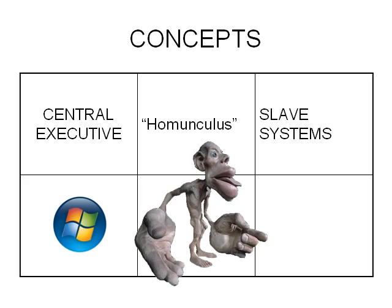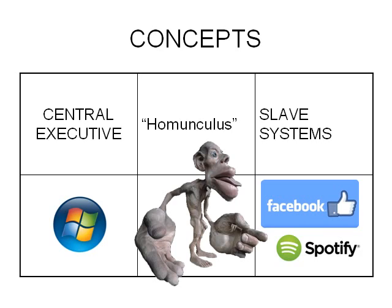Working memory isn't just the central executive, of course, because that by itself doesn't do much. It has got two slave systems. And if working memory's central executive is like Windows, then the slave systems are like programs or apps — for example, Facebook or Spotify. Let's take a look in more detail.